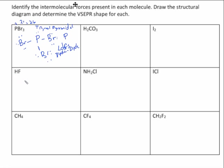Now let's go to HF. If you draw the Lewis structure for HF, you would get HF looking like this. Everything has London dispersion forces. HF would be a polar molecule because the atoms aren't the same — it's linear with different atoms. So because it's polar, it also has dipole-dipole.